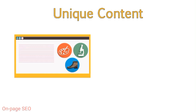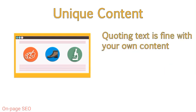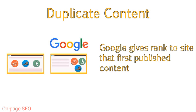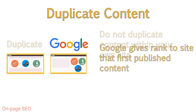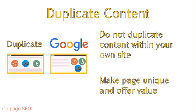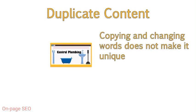Another thing to be aware of is the importance of unique content. Copying content from elsewhere and placing it on your site will not help your site to rank. In fact, having little to no unique content may result in a penalty. If you want to quote text from elsewhere, that's fine, but surround what you are quoting with your own content so the page presents a unique perspective. It's also a good idea to link back to the page you are quoting. Generally, in instances where duplicate content is a concern, Google will give credit to the first site that published that content. Duplicate content doesn't always mean content that matches the content of another site — you should also be aware of duplicating content within your own site. Make sure each page is unique and offers value to your readers. Keep in mind that copying a page and changing a few words is still going to be seen as largely duplicated.